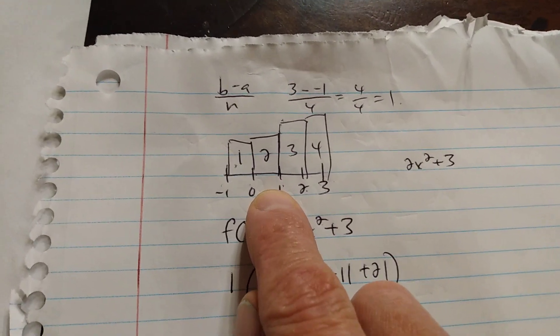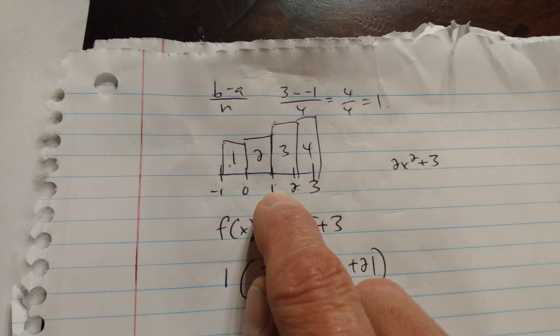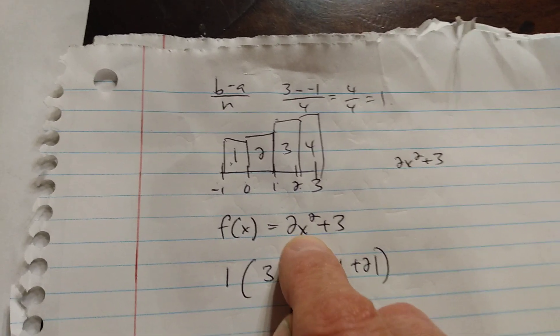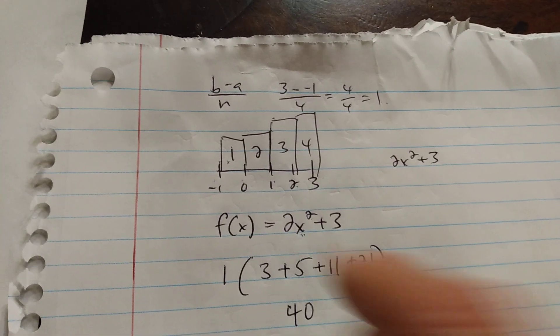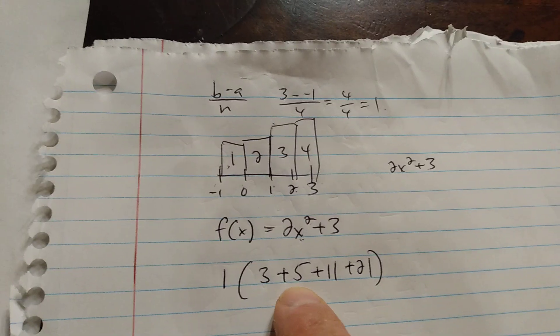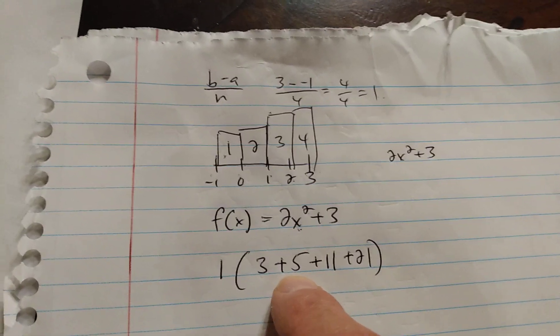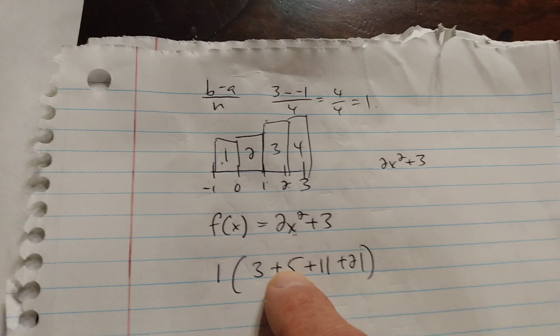1 is the x value, I sub it into my f of x, sub 1 into this, 1 squared is 1, times 2 is 2, plus 3 is 5. So that's the height of my second rectangle.